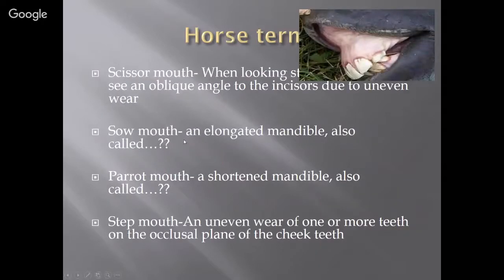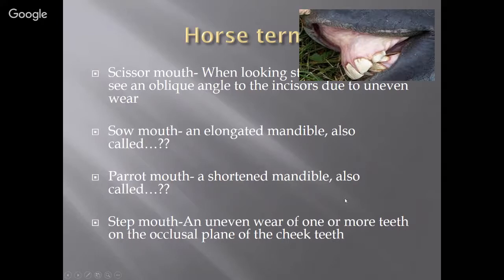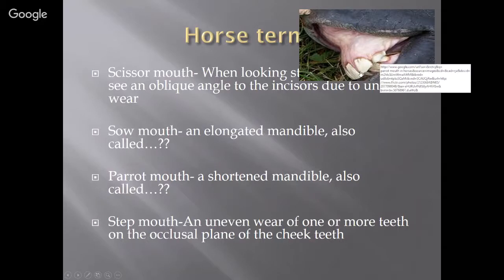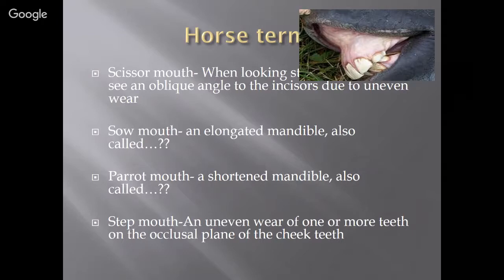Horses are slightly different. Looking at an oblique angle, you might see uneven incisors. Sow mouth is what we call an elongated mandible — also called mandibular brachygnathism. Step mouth is an uneven wear of one or more teeth on the occlusal plane of the cheek teeth, where it looks like there's a step occurring within the teeth.